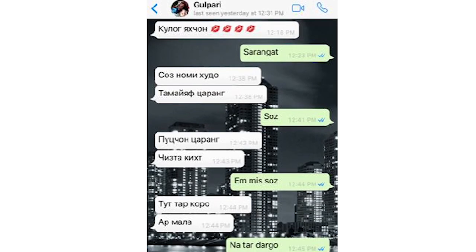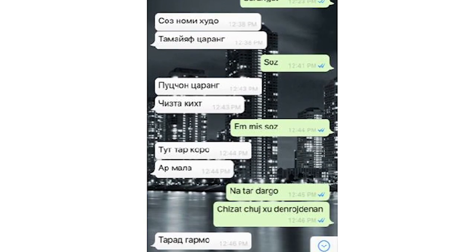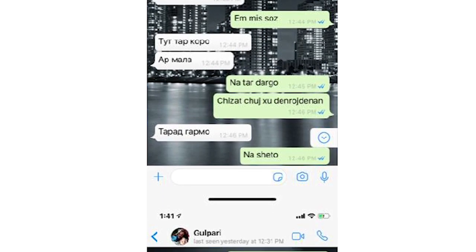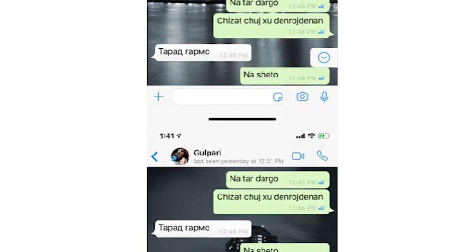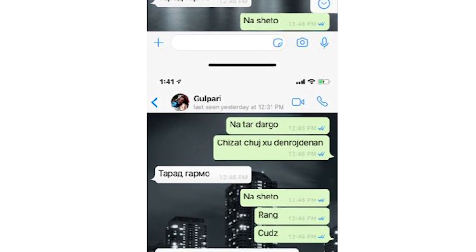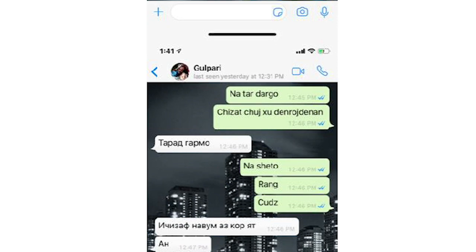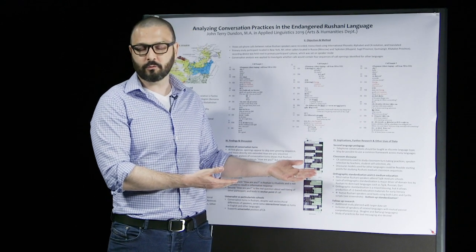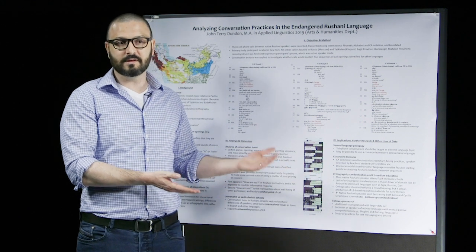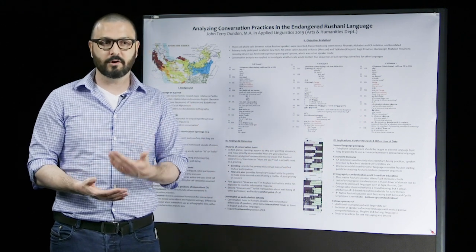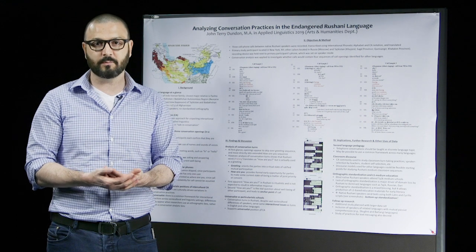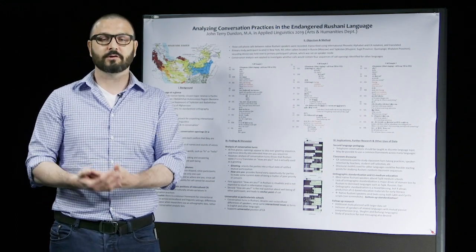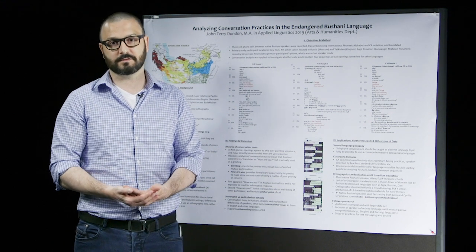One of the speakers in my conversation is in New York using a US cell phone and texting in Latin letters, while the other is in Tajikistan with a Russian cell phone texting in Cyrillic letters — and neither of these people was ever taught the other's alphabet. It developed organically. If we could work towards orthographic standardization, we could take early literacy and primary education books and perhaps even translate them into Rushani, so native Rushani speakers could learn to read and write and have basic education in their own mother tongue.